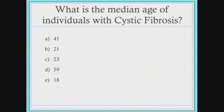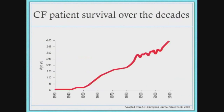Research has come a long way. The median age of individuals with CF is now 23, meaning individuals are able to live longer and be diagnosed at a later stage. CF patient survival over the decades has immensely increased — in 1930, infants wouldn't be able to live past the age of one or two, but now the median survival is about 52.3 years, which is remarkable.